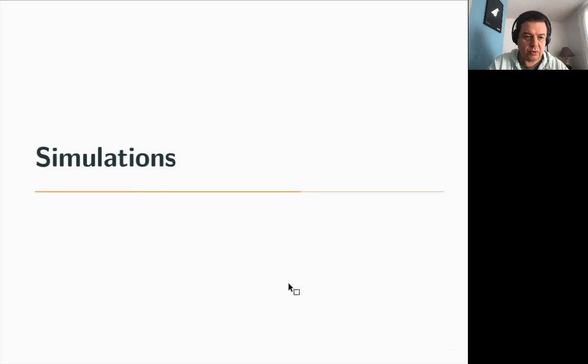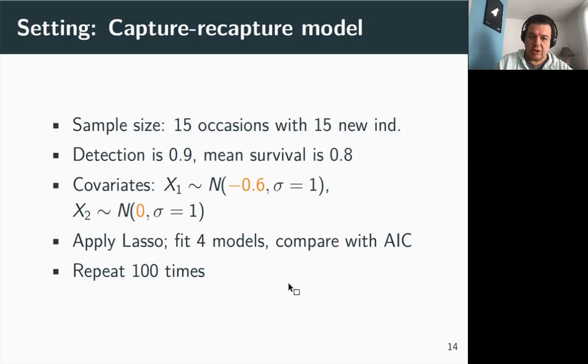Let's go for some simulations. To validate the approach, or at least to assess the performances of the approach, we conducted a simulation study. For the sample size, we considered 15 sampling occasions with 15 new individuals marked and released at each of these 15 occasions. The detection was high, 0.9, and mean survival was around 0.8 also. We considered two covariates possibly explaining temporal variation in survival. X_1 had a negative effect on survival on the logit scale, and X_2 had no effect whatsoever on survival. This coefficient was zero.